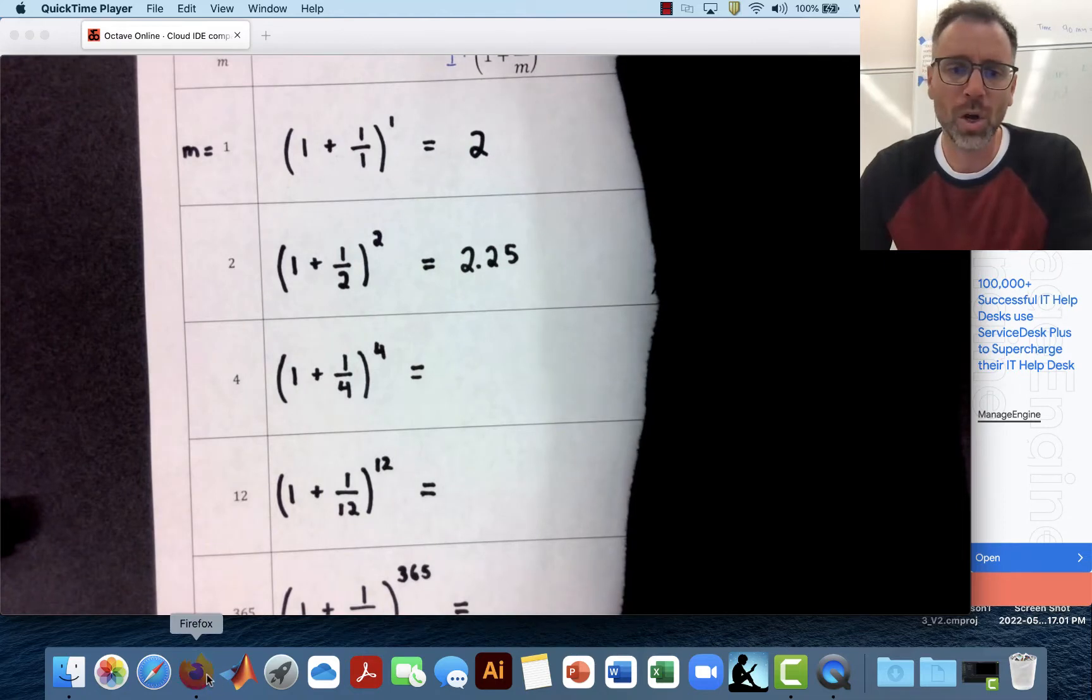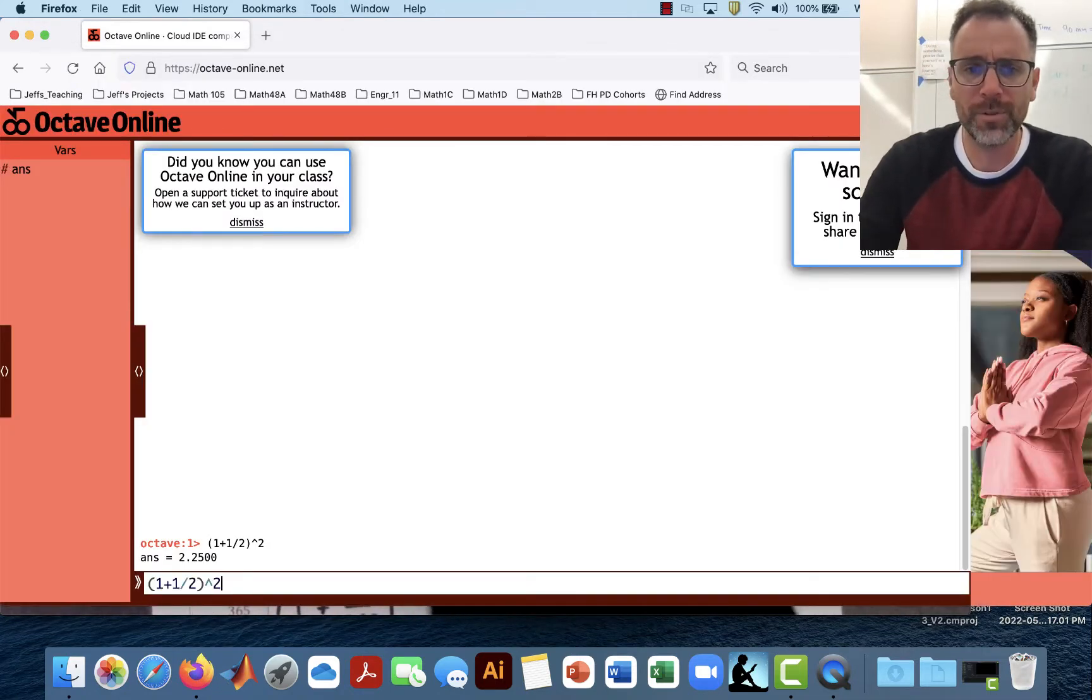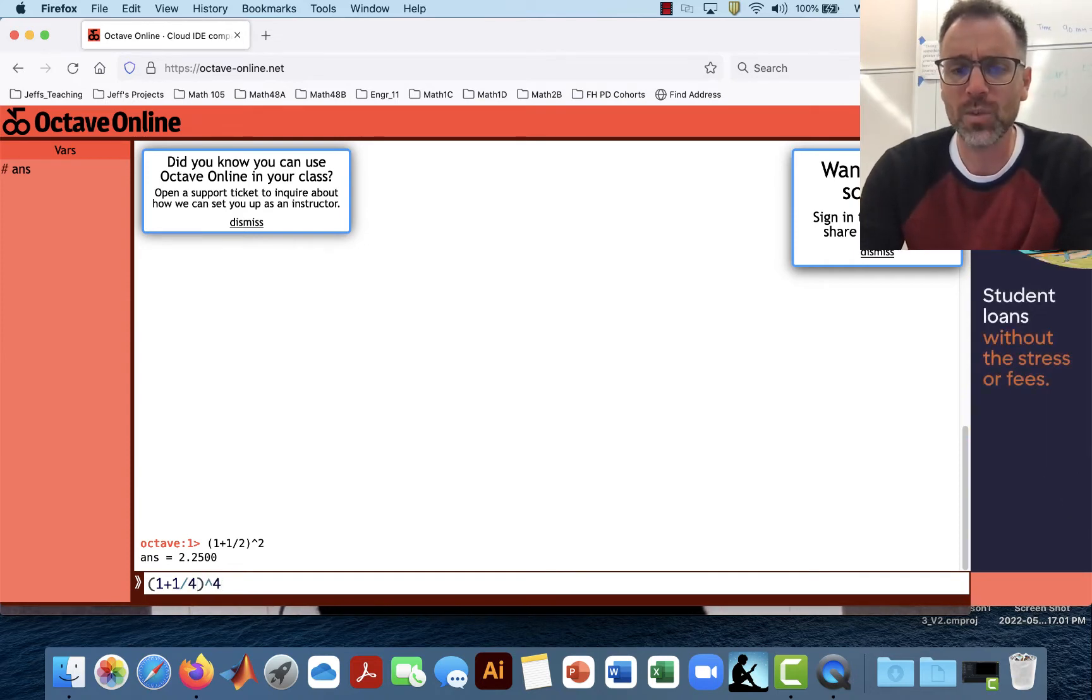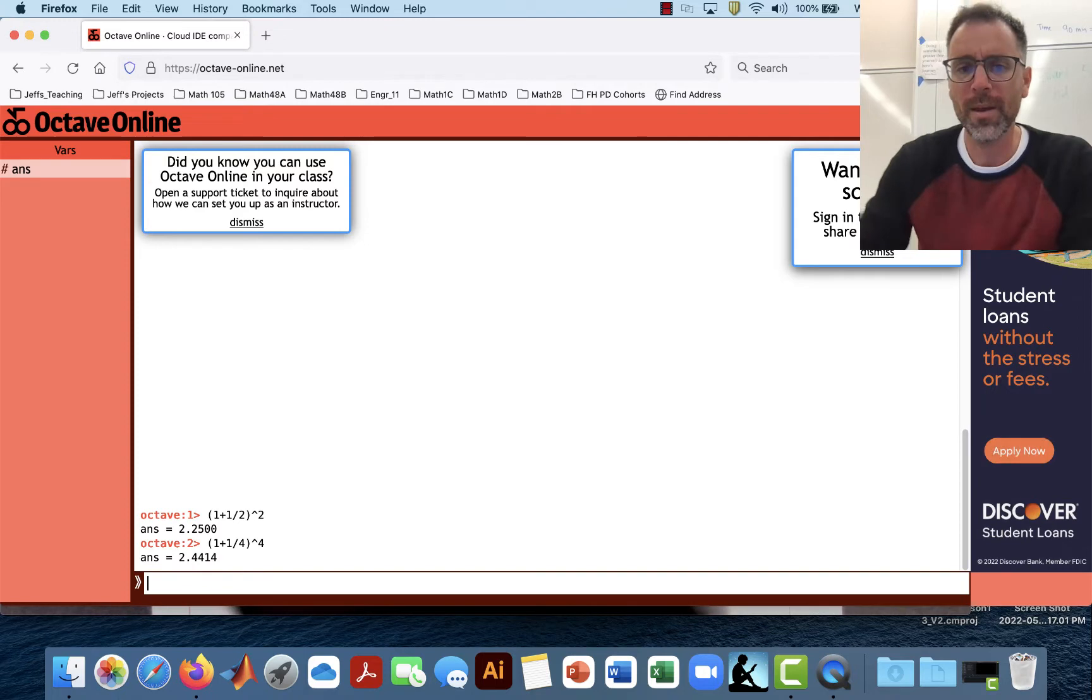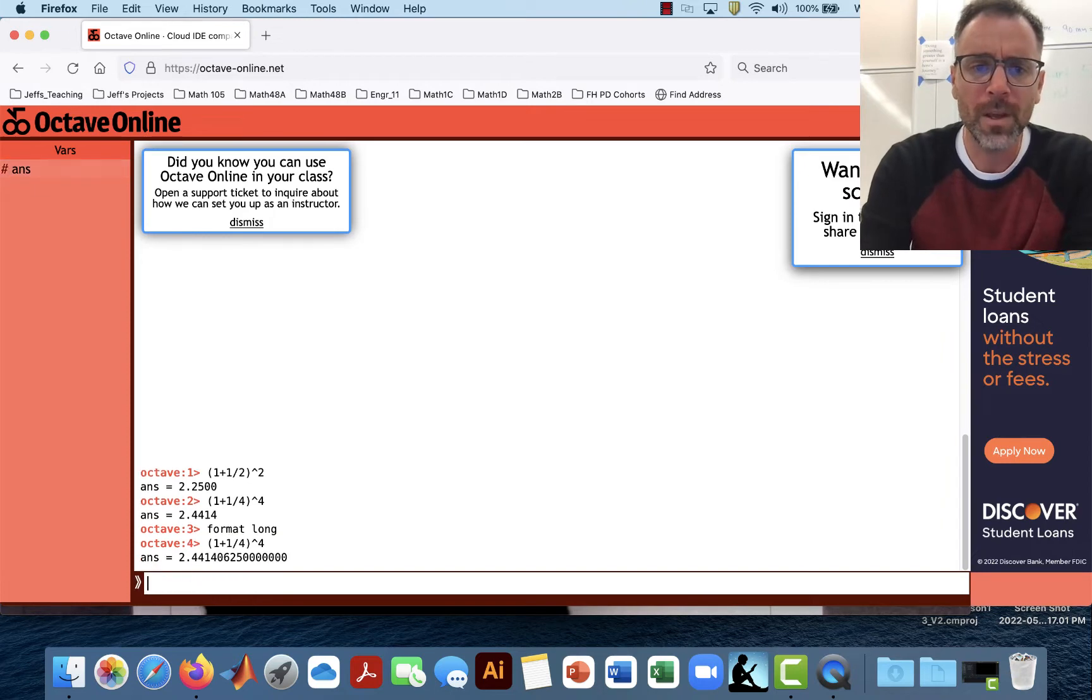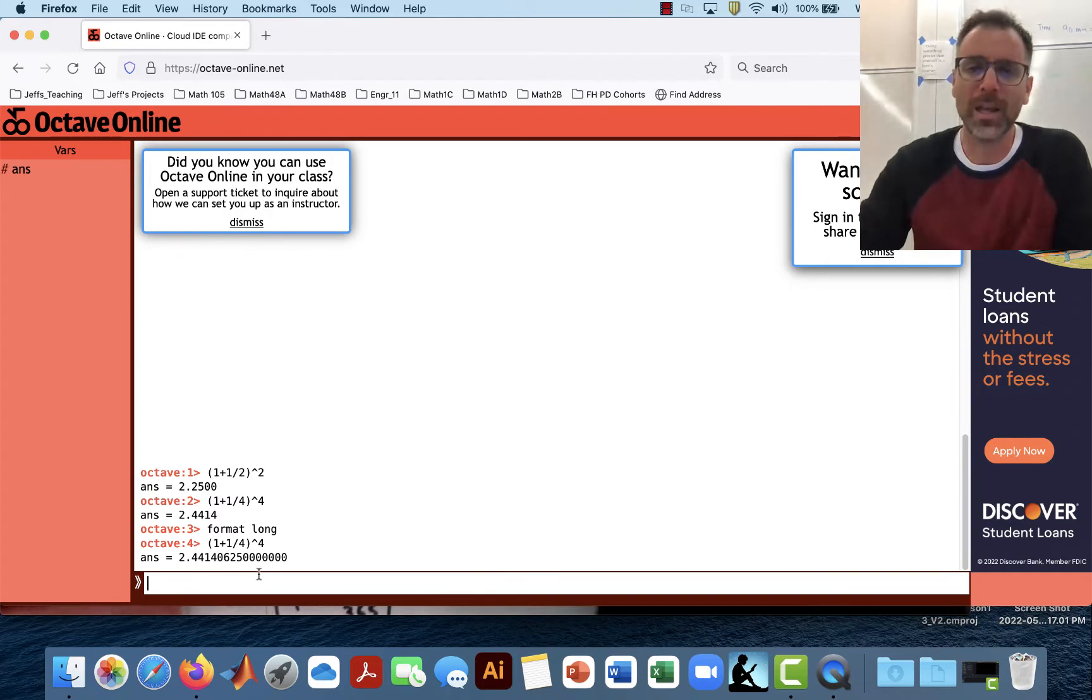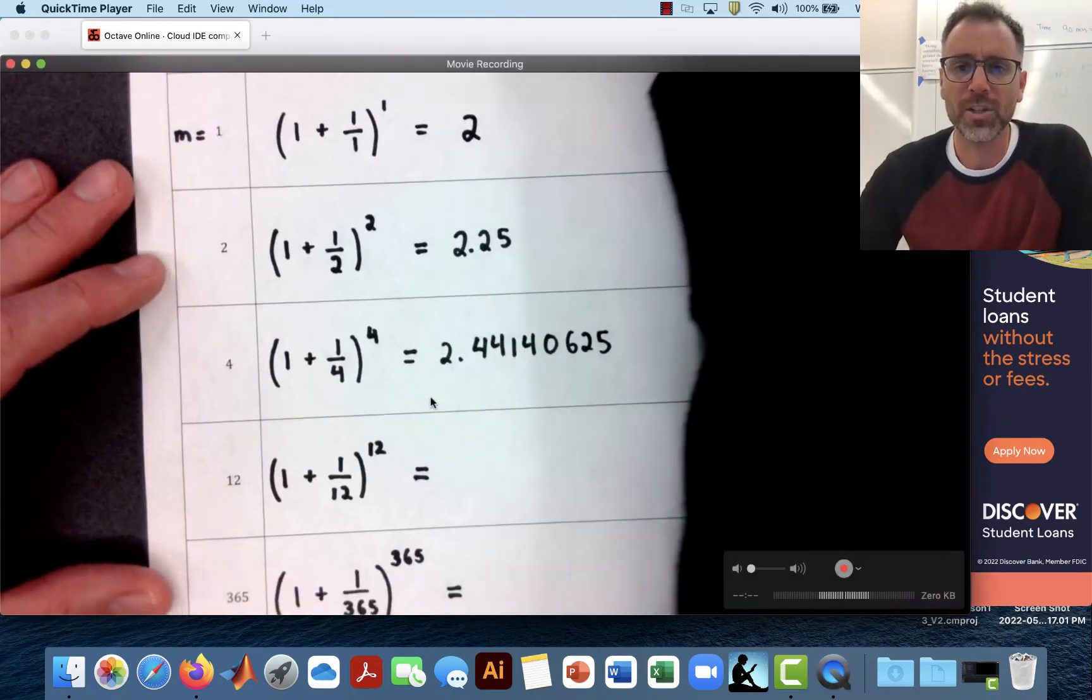So if we go back to our calculator, I literally push the up arrow, it will get me back to the last version. And in this situation maybe I say it's 1 plus 1 fourth to the fourth. How much money would I have? Let's go ahead and format long. So this will give me a longer approach to that. So what is this? 2.44140625. Looks like a lot of digits there.